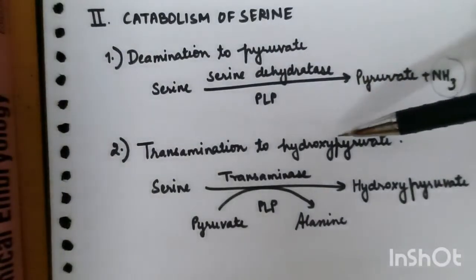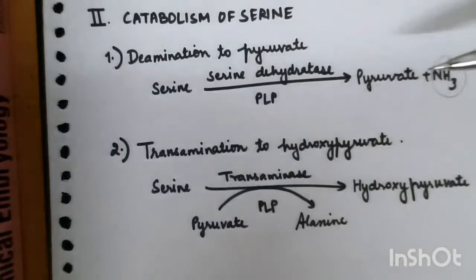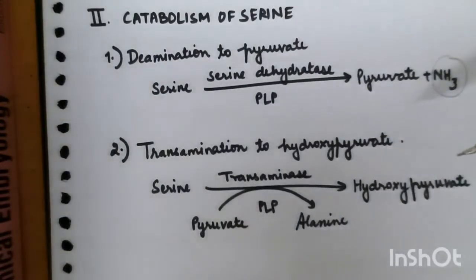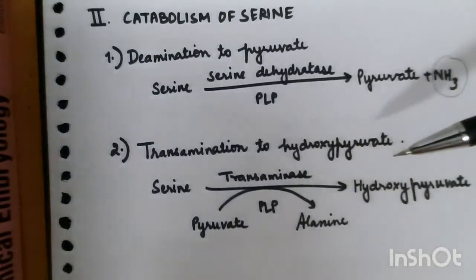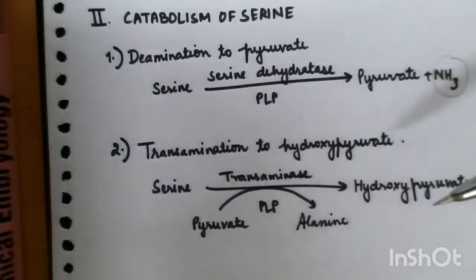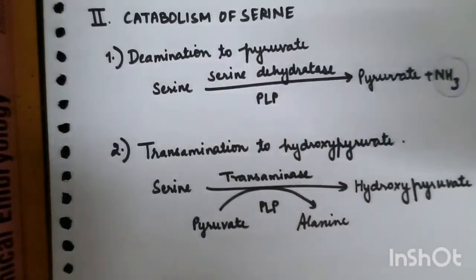The second catabolic pathway is transamination to hydroxypyruvate. Serine is converted into hydroxypyruvate in the presence of enzyme transaminase and coenzyme PLP, and pyruvate is also converted into alanine.